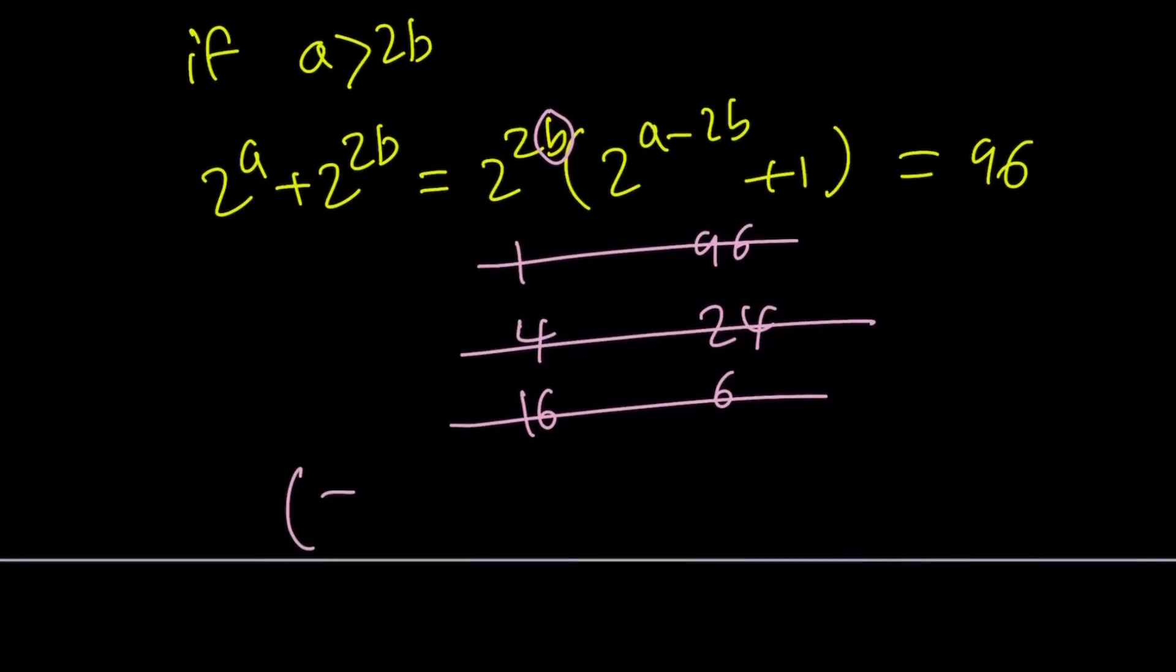Which means 5, 3 is the only solution for 2 to the a plus 4 to the b equals 96.